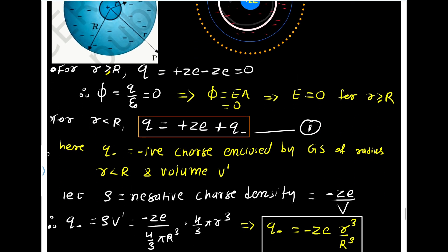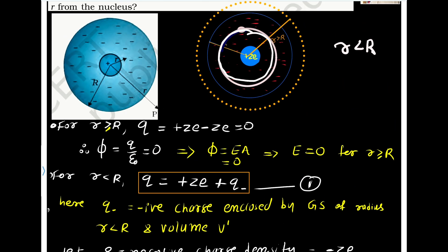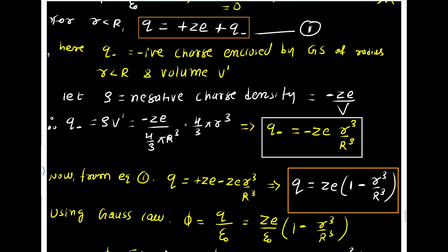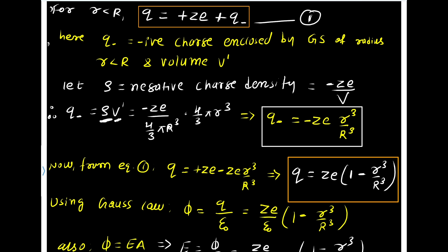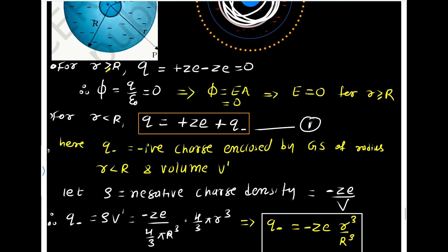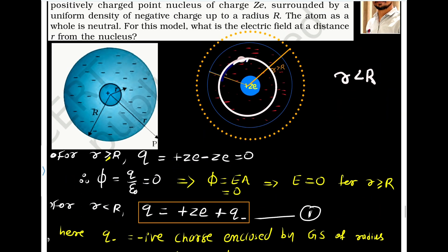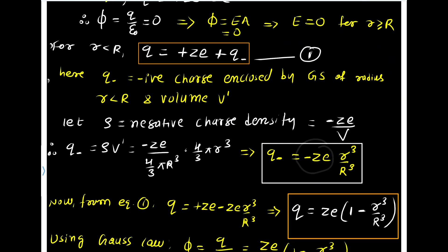Let the volume of this inner sphere be V dash. Let rho be the negative charge density. As the charge is uniformly distributed, density equals total charge upon volume. So for negative charge, rho equals minus Ze by V, where V is 4/3 pi R cubed. The charge Q minus equals rho into V dash, where V dash is 4/3 pi r cubed. The 4/3 pi terms cancel, so the negative charge enclosed in this Gaussian surface is minus Ze r cubed by R cubed.